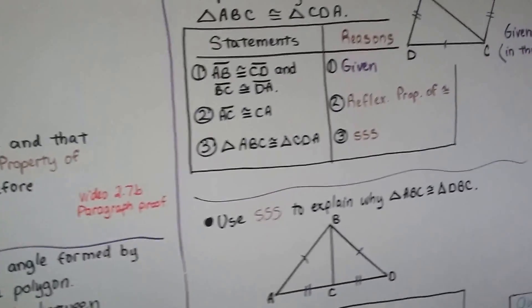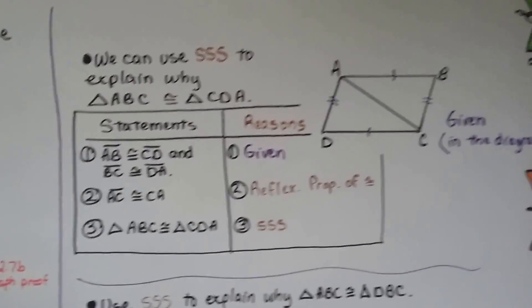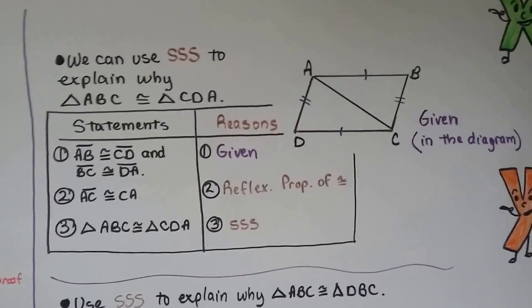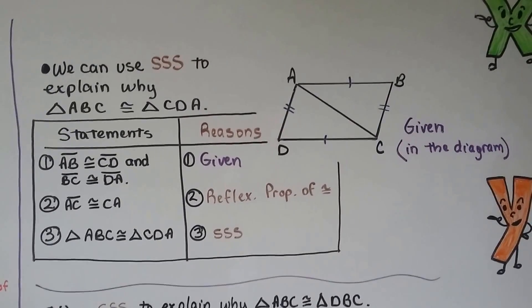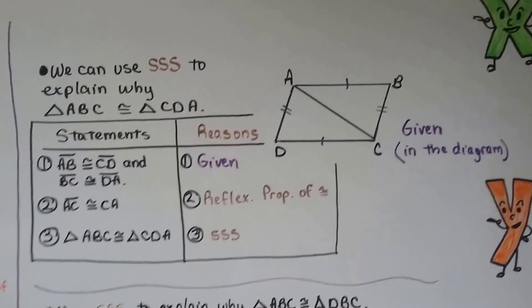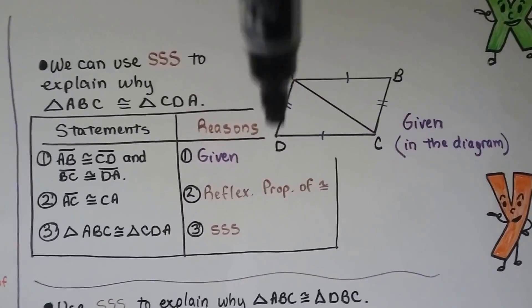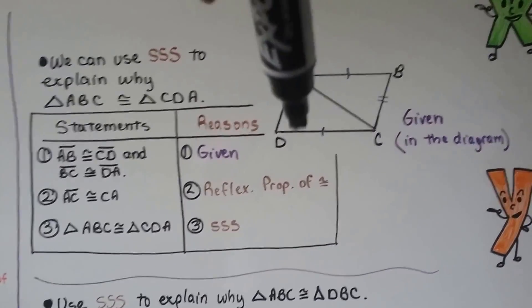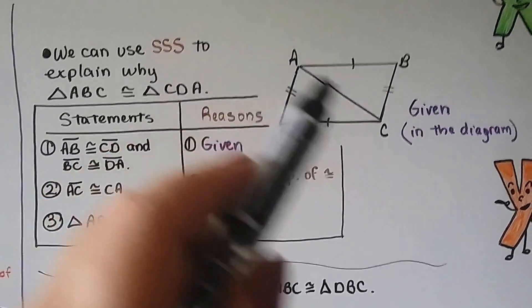We've got a little two-column proof here. We can use SSS to explain why triangle ABC is congruent to triangle CDA. So we're saying that this triangle is congruent to this triangle, and look — they're sharing line AC.